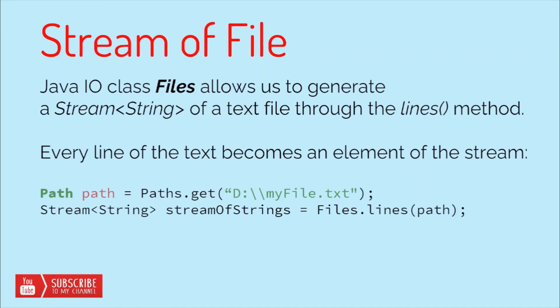We can also get a stream of a file using the Java IO class Files, which allows us to generate a Stream of String from a text file through the lines method. In this example, we have a Path object reading a file myfile.txt from the D drive. Using Files.lines() and passing that path as an argument, this code results in a Stream of Strings, reading the file line by line and adding each line as a different stream element.